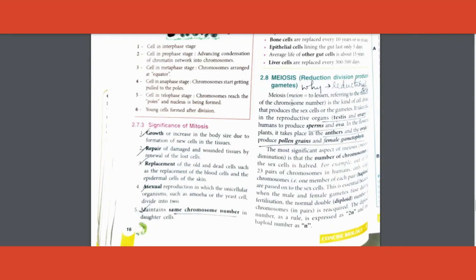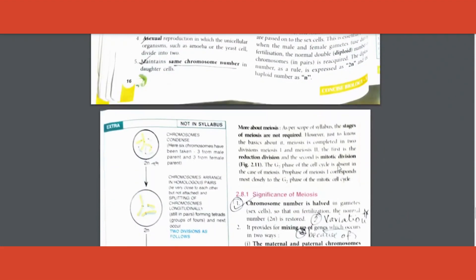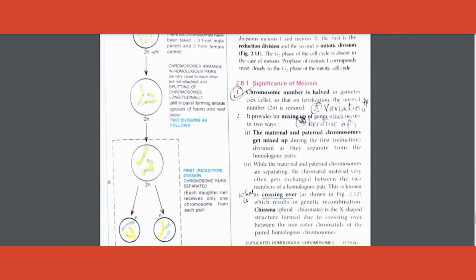Significance you have to write two points. I have written the second point down for you. First point is chromosome is halved. Second point is that due to mixing up of genes, variation is caused. May cause variation due to mixing of genes.